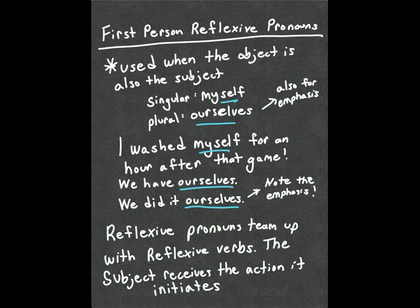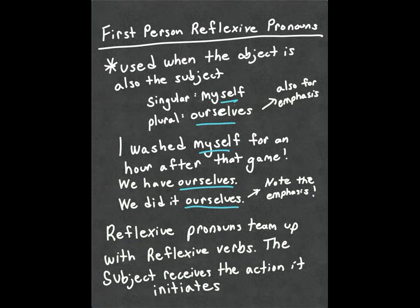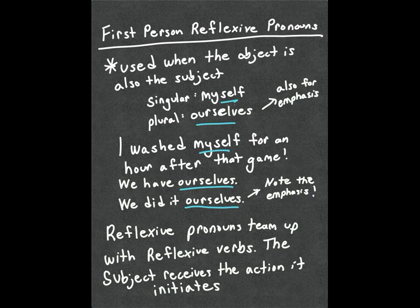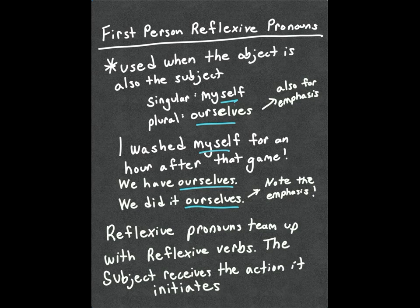For first-person reflexive pronouns — what happens when we're doing the action but also receiving it? "I washed myself for an hour after the game." The plural form is "ourselves" — "we have ourselves." You can also use the reflexive pronoun for emphasis: "we did it" is a complete thought, but "we did it ourselves" stresses that we're the ones who performed the act. It expresses the same idea, only with an extra emphasis by adding "ourselves."